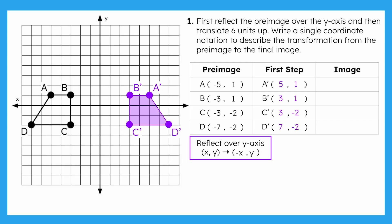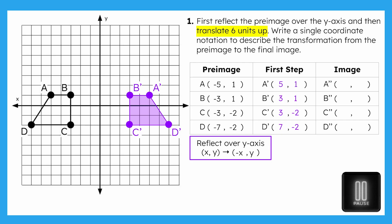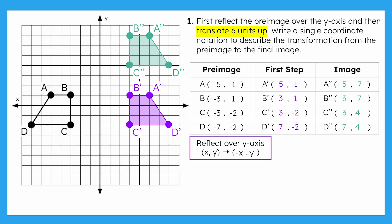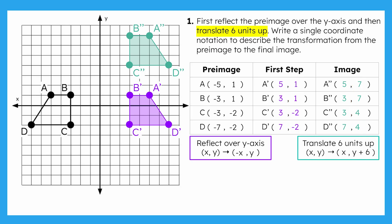Now let's move to our next transformation in the sequence: translating 6 units up. Since we're performing a second transformation, we can label these coordinates as double prime, which uses a double apostrophe. Pause now to translate A', B', C', D' prime 6 units up and record the new coordinates. After shifting each prime point up 6 units, A', B', C', D' double prime should look like this, and these are its coordinates. Only the y-coordinate changed, increasing by 6, so we can write x comma y plus 6 as the coordinate notation.